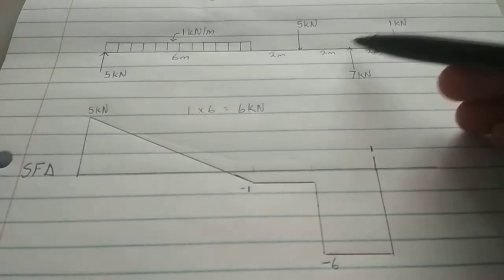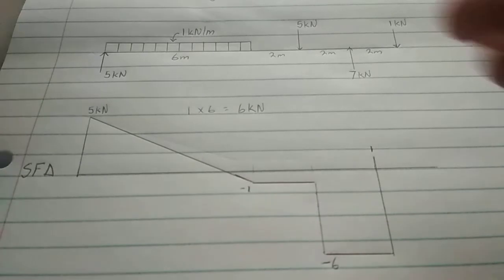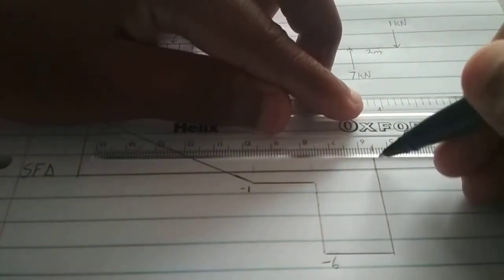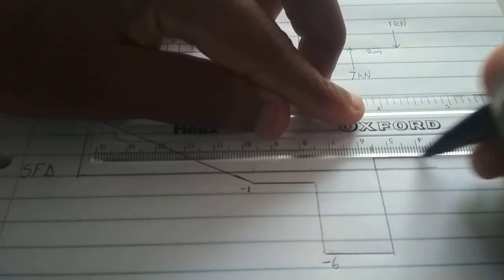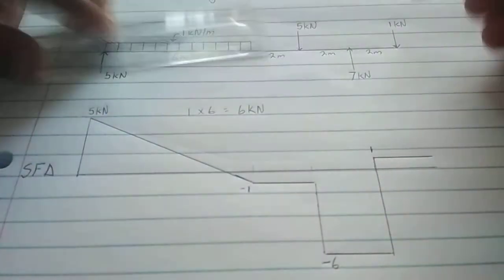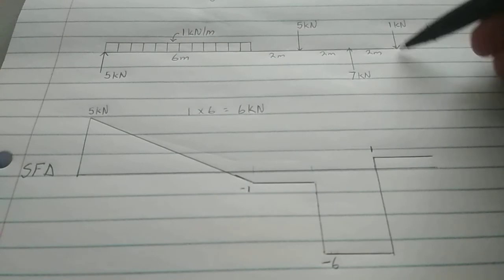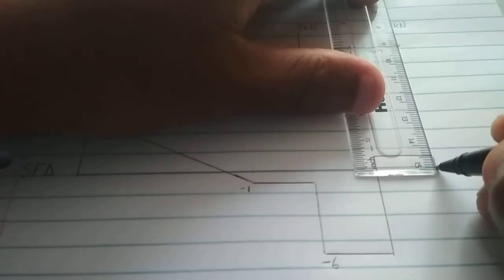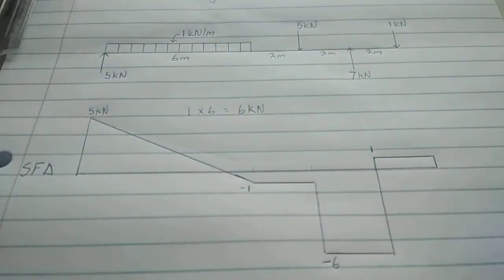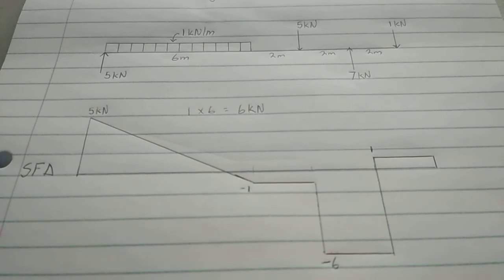And from there to there is another constant movement. So we just draw it across like that. And then from there, we move down 1 kN. So we just go 1. That completes our shear force diagram.